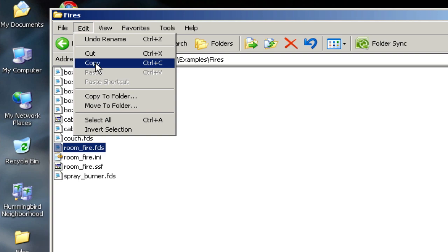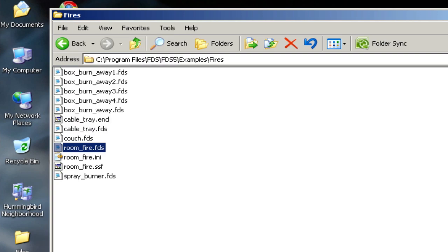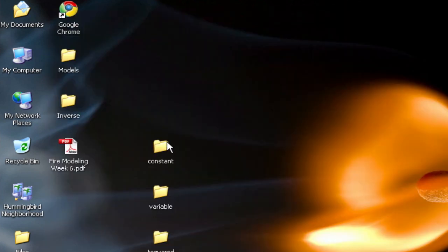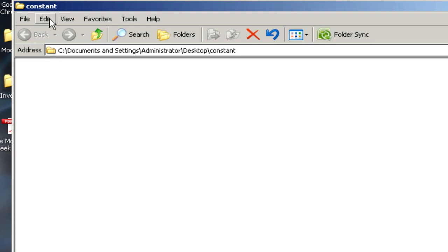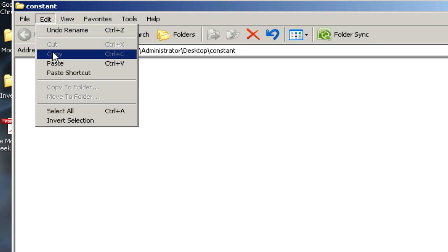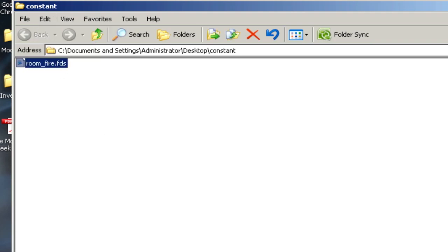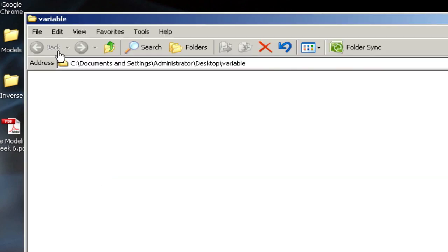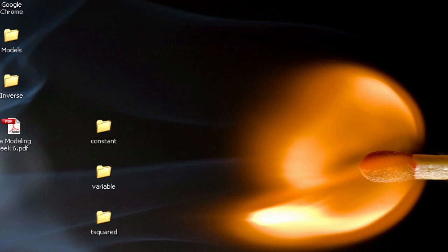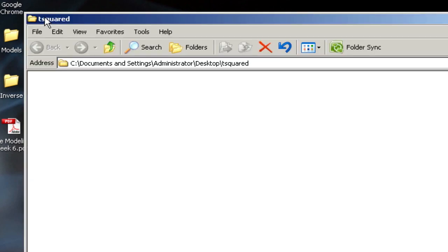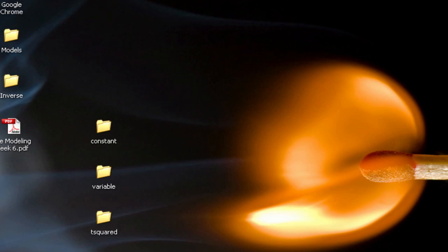I want to copy that file by going to Edit Copy. And then I just want to paste that file into each of these three folders. So I'll open constant, Edit, Paste. And same thing for variable, Edit, Paste. And finally, same thing for T squared, Edit, Paste. So I now have that default RoomFire case in all of these folders.